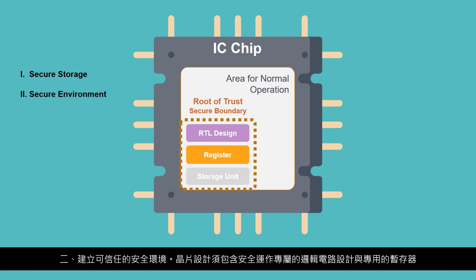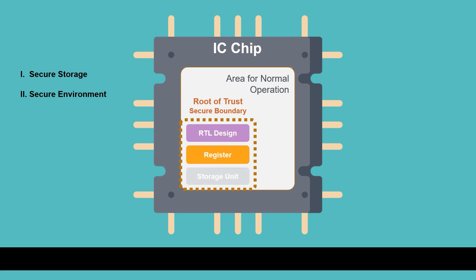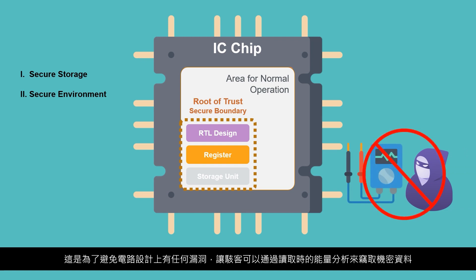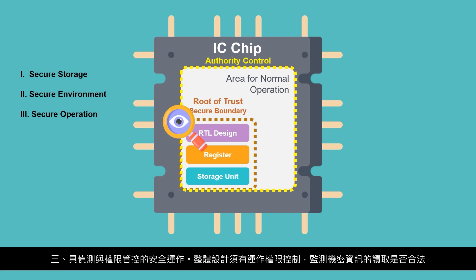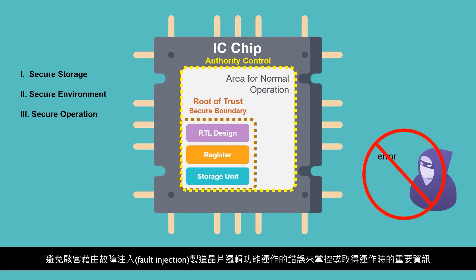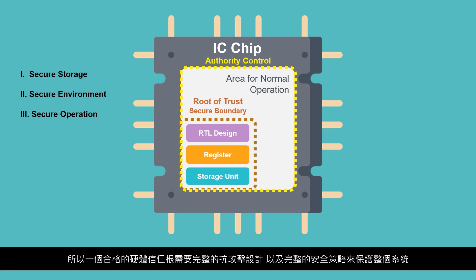Second, Secure Environment: the chip design must also include a dedicated registered logic circuit design for secure operation, as well as other auxiliary circuits for detecting abnormal behavior. This is to avoid any vulnerabilities in the circuit design which would allow hackers to steal confidential data through power analysis. Third, Secure Operation: the design must have privileged control to monitor the operational legitimacy for accessing confidential information, and prevent hackers from controlling the system or obtaining important information through fault injection. Therefore, a qualified hardware root of trust requires a comprehensive anti-tampering design and a complete security policy to protect the entire system.